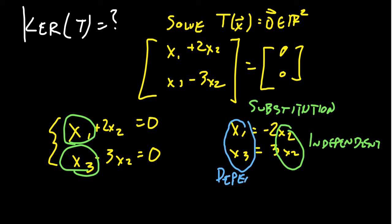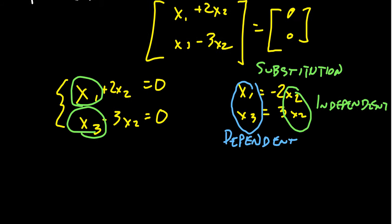Whatever you choose for x2, which there's no restriction on what we can choose for x2. It could be any real number. Whatever you choose for x2, x1 and x3 will be determined by that. So as an example, right,